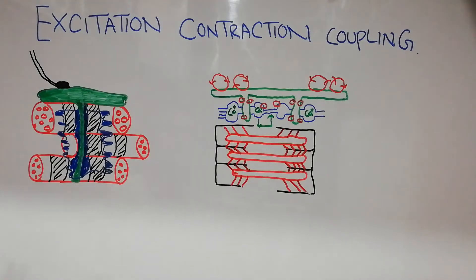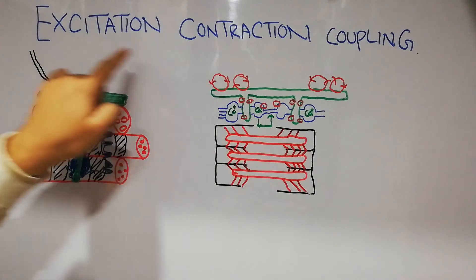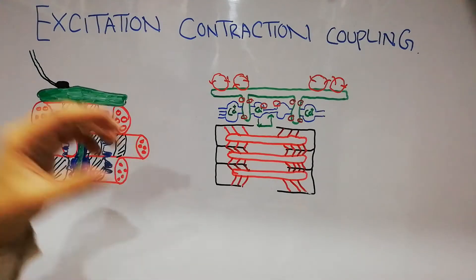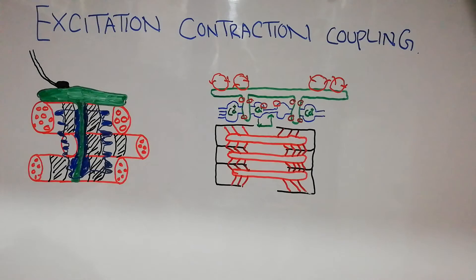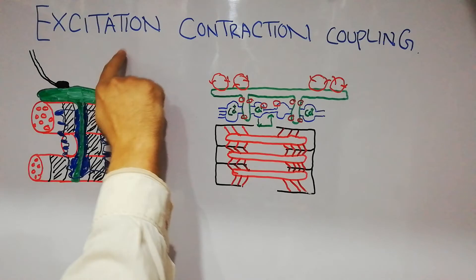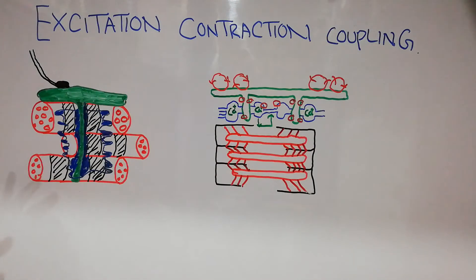Today we are going to discuss another easy and simple topic: excitation-contraction coupling. We are discussing a series of lectures about skeletal muscles. We have already discussed the process of excitation of skeletal muscles with the help of nerve fibers, and the mechanism of contraction of skeletal muscles and the factors which influence it. Now we will discuss how these two processes are combined — how excitation combines with contraction — which is known as excitation-contraction coupling.